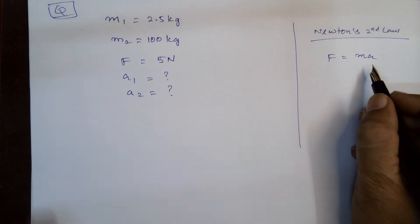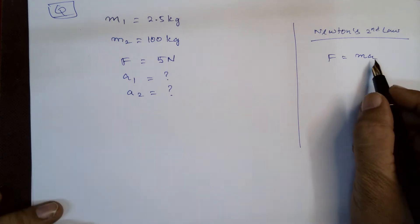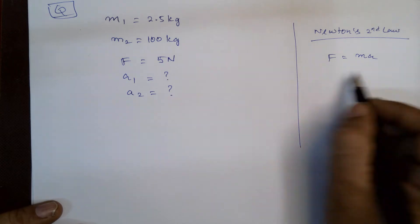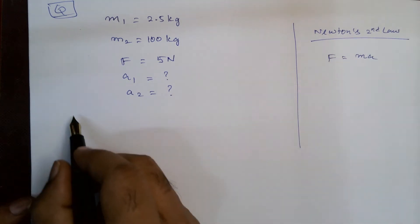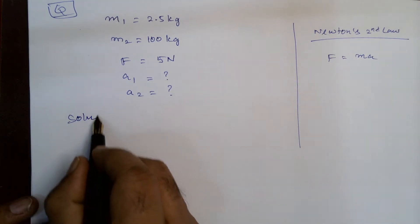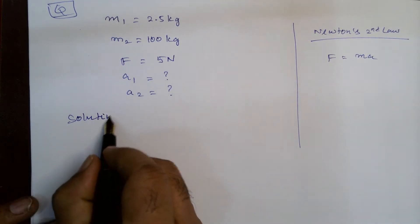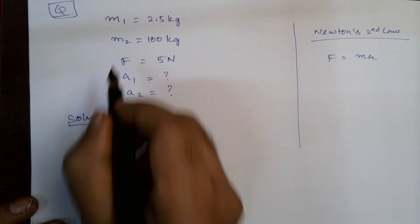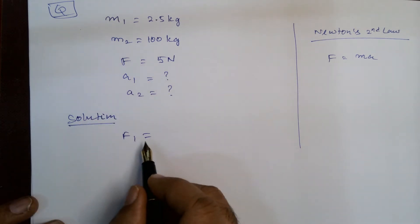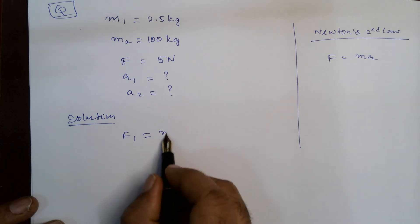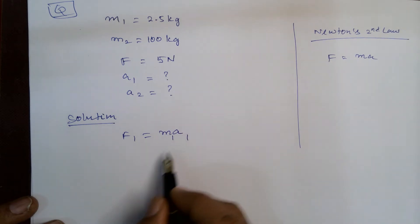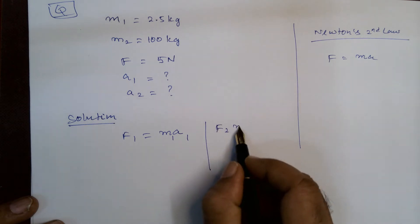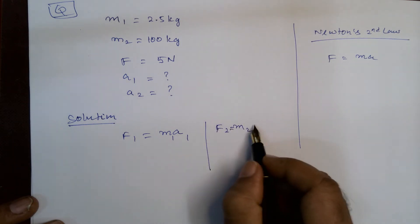F is equal to force, M is equal to mass, A is equal to acceleration. So we are going to use this as our tool for the solution. We can apply it for each mass: F1 is equal to M1 times A1, and F2 is equal to M2 times A2.